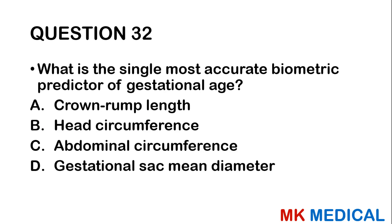Question thirty-two: What is the single most accurate biometric predictor of gestational age? A, crown-rump length; B, head circumference; C, abdominal circumference; D, gestational sac mean diameter. The crown-rump length is the most accurate biometric predictor.